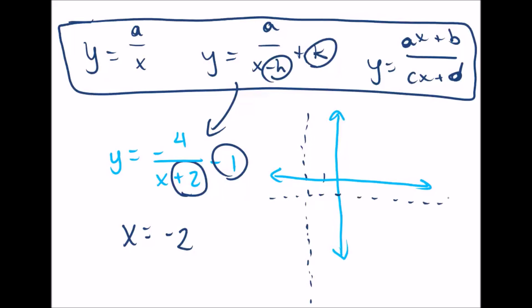And once again, none shall pass this line. So we know this graph, we don't know what it looks like yet, but we know it's contained somewhere in these corners, because it can't really cross to the other corners.